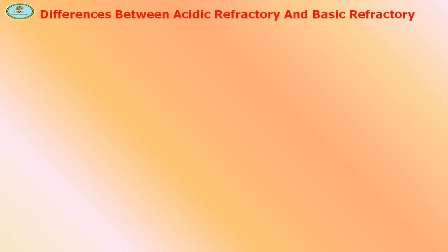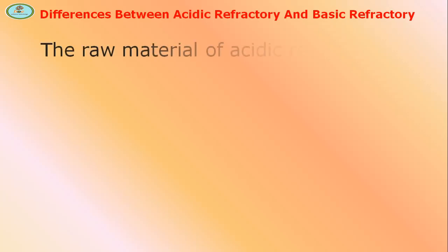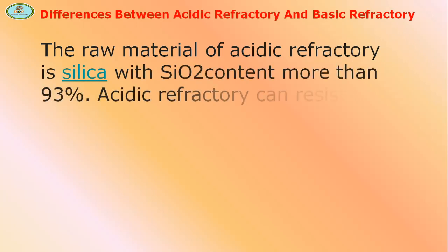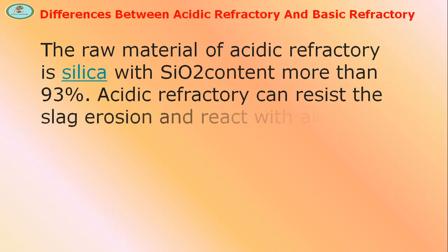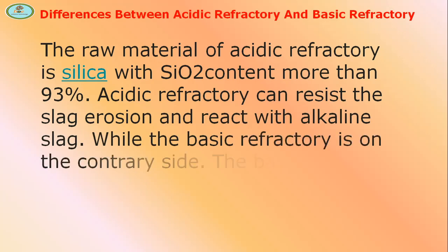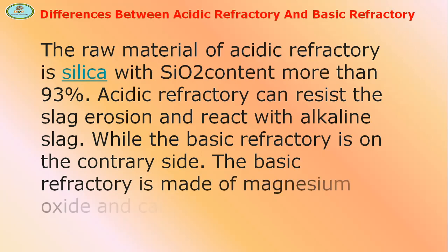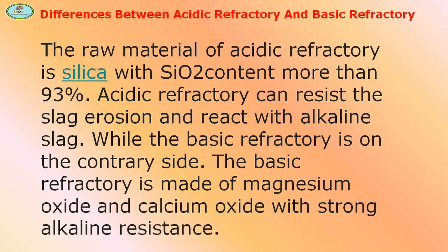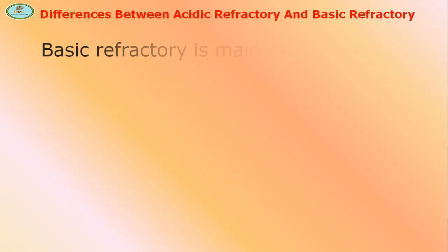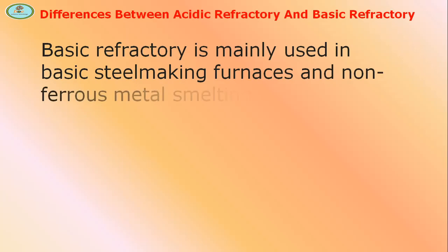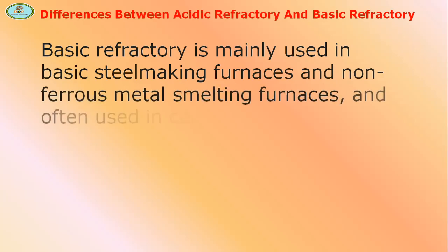Difference between acidic refractories and basic refractories: The raw material of acidic refractories is silica with SiO2 content more than 93%. Acidic refractories can resist acid slag erosion but react with alkaline slag. Basic refractories, on the other hand, are made of magnesium oxide and calcium oxide with strong alkaline resistance, and are mainly used in basic steelmaking furnaces, non-ferrous metal smelting furnaces, and often in the cement industry.